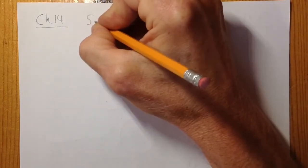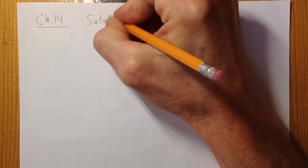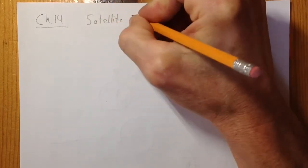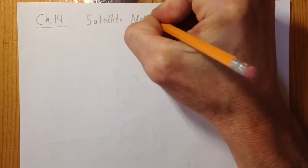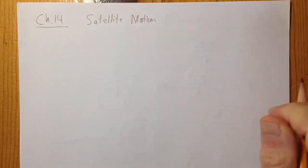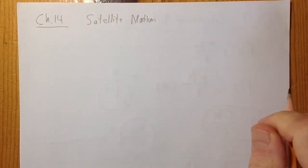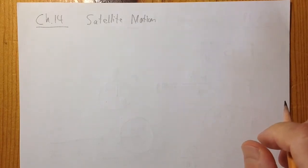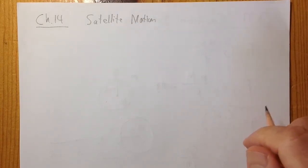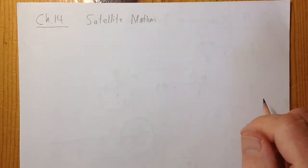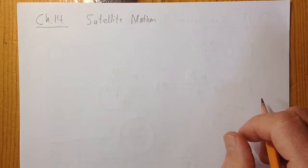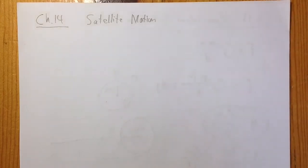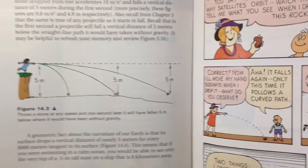Let's go over chapter 14. Chapter 14 is mostly about satellites, which is anything orbiting something else. We're a satellite around the sun. The sun's a satellite around the galaxy. But why do you orbit something? Why do you go in a circle around something that pulls you by gravity? Why don't you fly directly into it? The basic idea is shown in this picture here in the book.